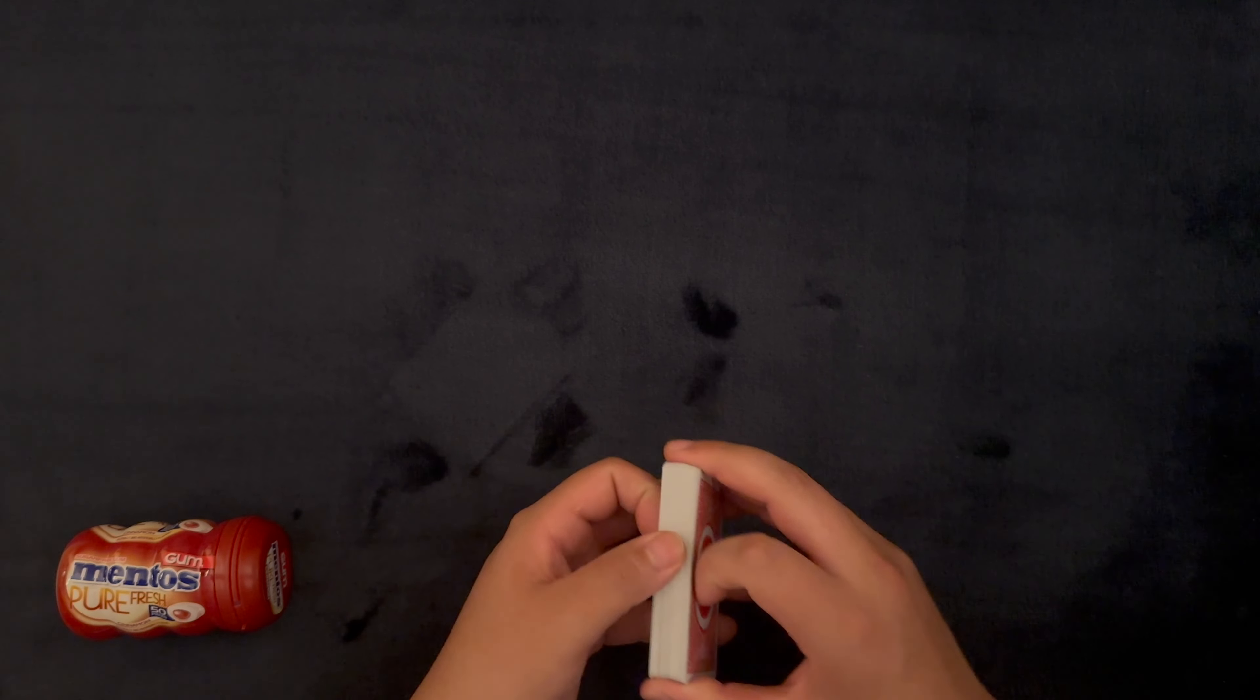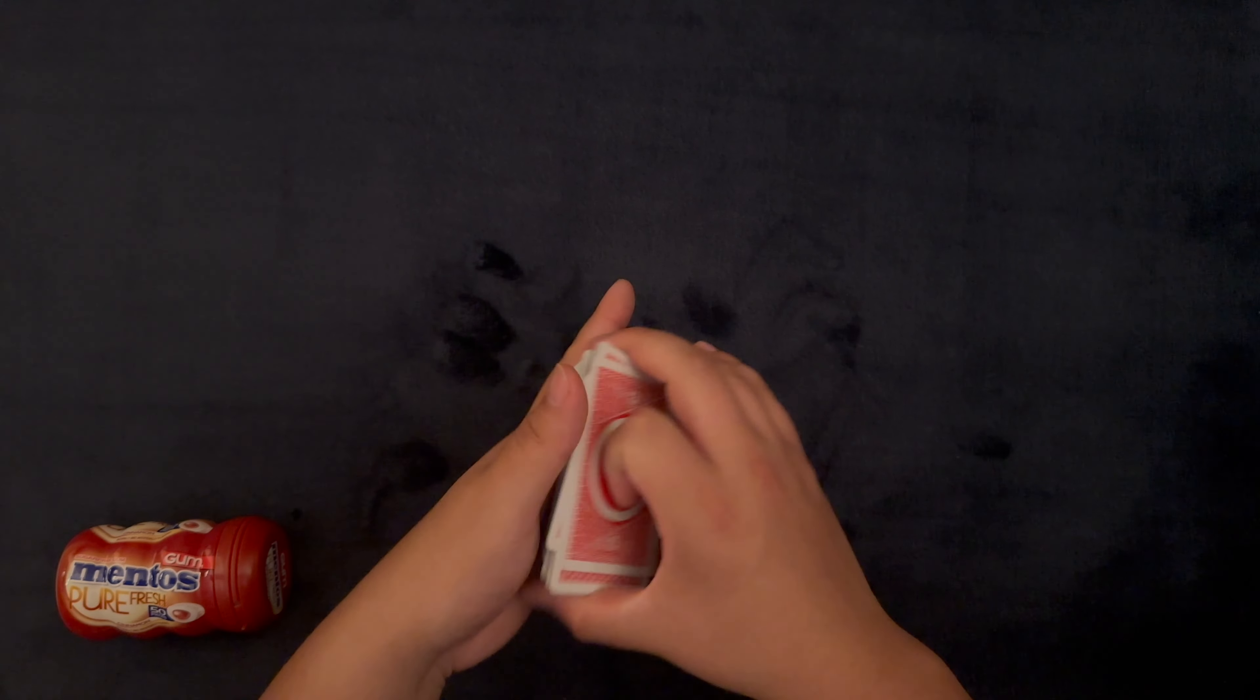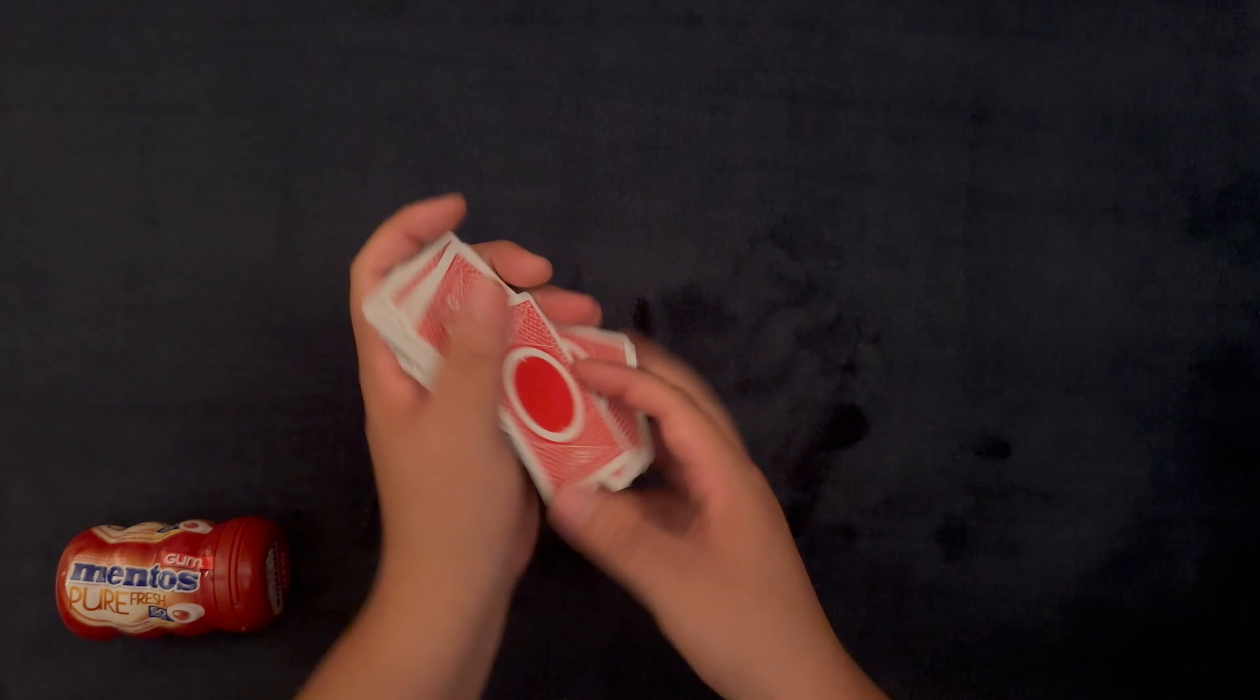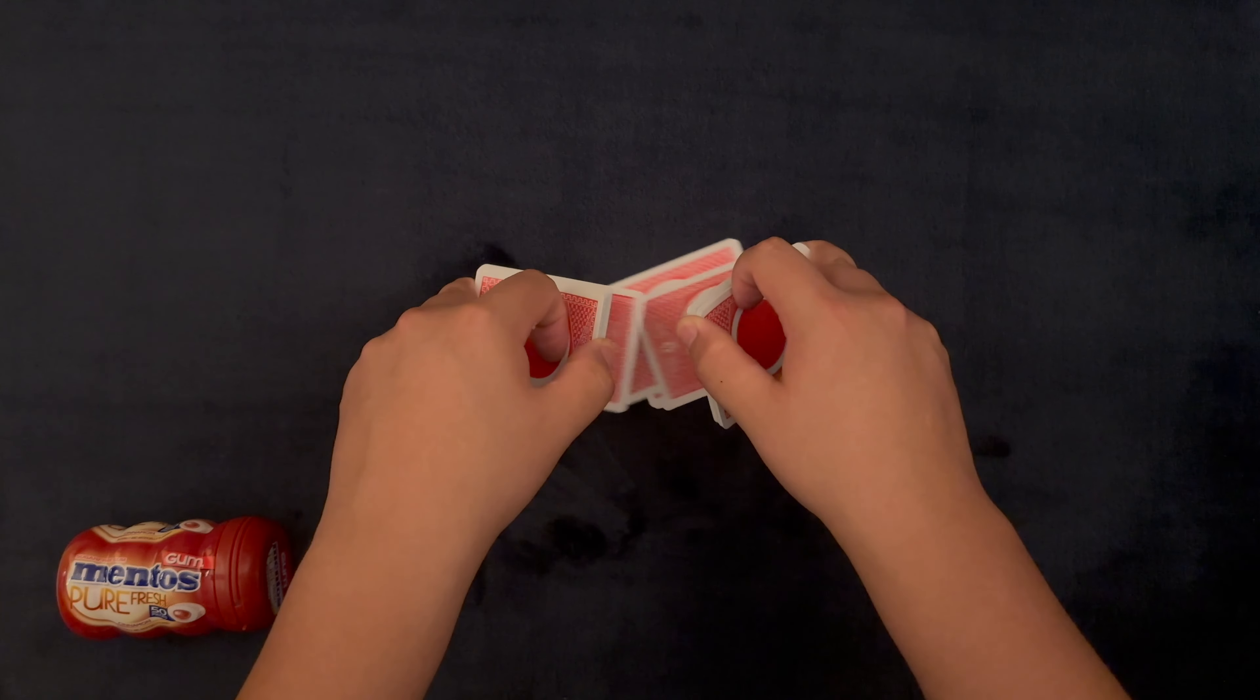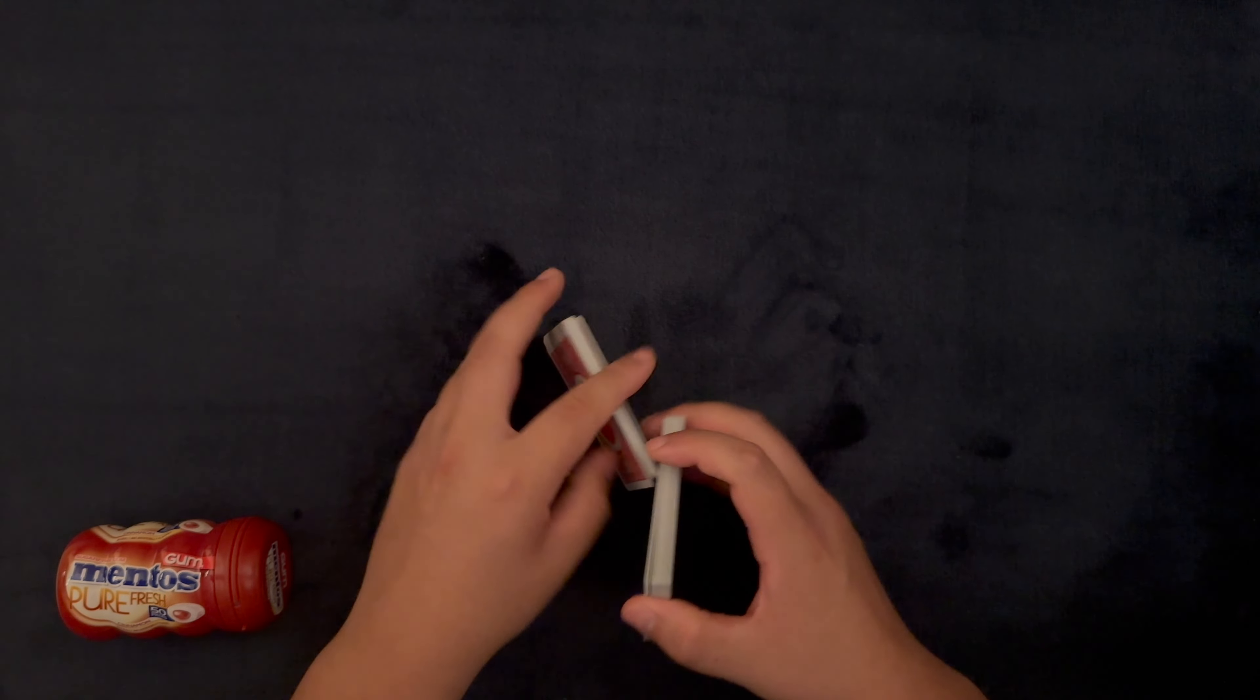Tonight, we have some Mentos Cinnamon Gum with the Tally Ho Orbit Deck in red. Honestly, I'm excited about this one. These Mentos gums are fairly interesting. They have a little juice pocket in the middle. I left myself some cinnamon gum.